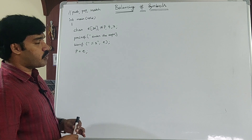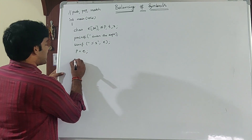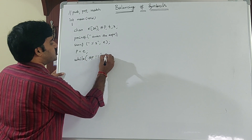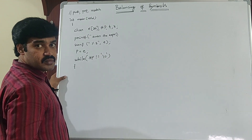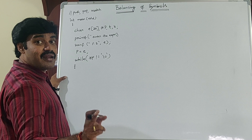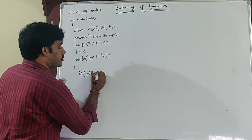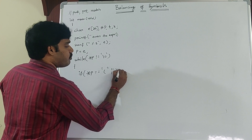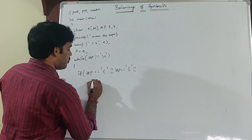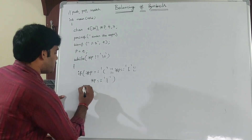This setup is common for all programs — infix to postfix, evaluation of postfix, or balancing of symbols. Scan the expression from left to right using: while(*p != '\0'). Inside the loop, ignore operands and operators. If the current character is an opening symbol — if *p == '(' or *p == '[' or *p == '{' — then push it onto the stack: push(*p).